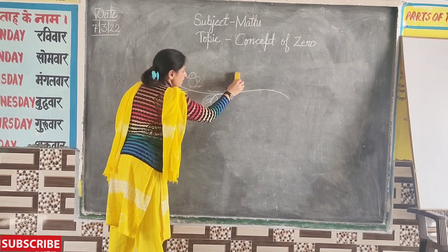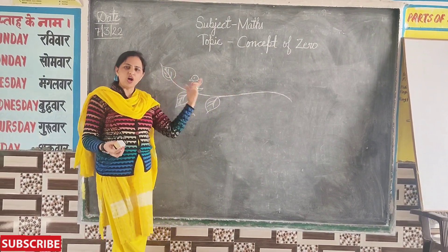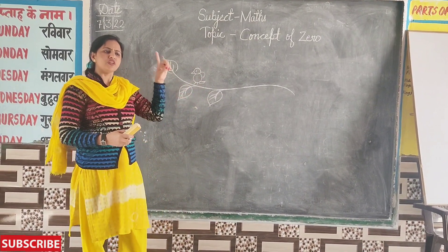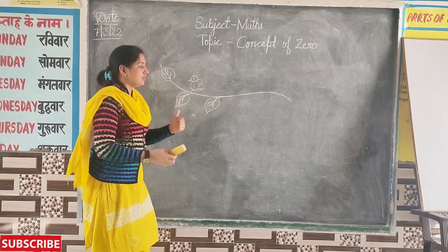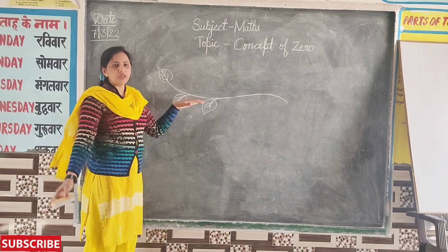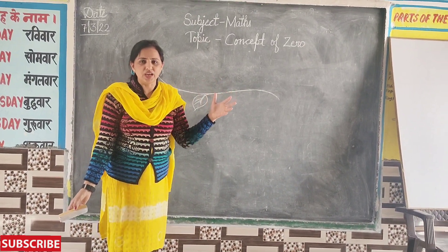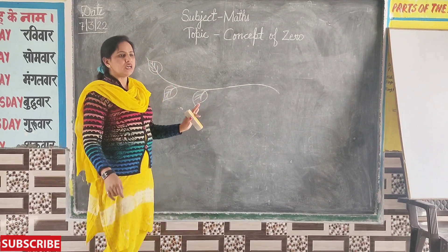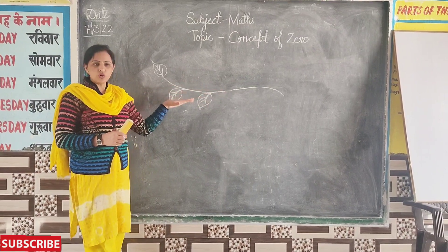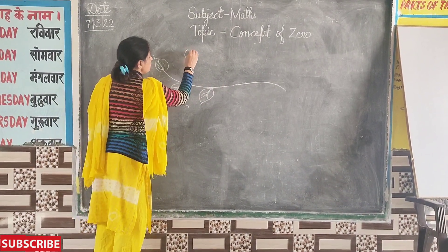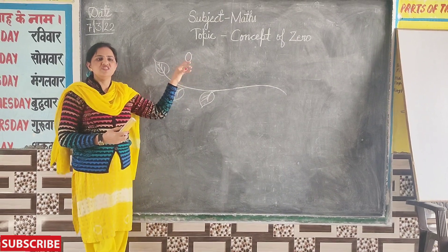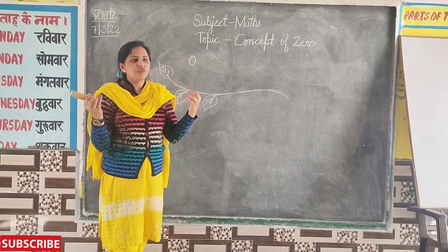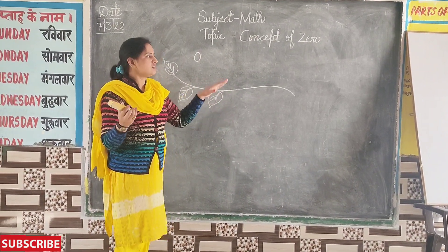Two more birds fly away. Now how many birds are left? One bird is sitting on the branch. Again, this bird also flies away. So now how many birds are left? No birds. Nothing is left. That means zero. Zero is left. When we have nothing left, that means zero.